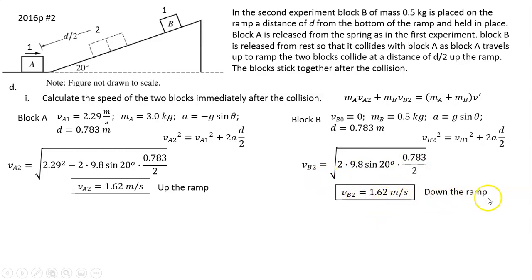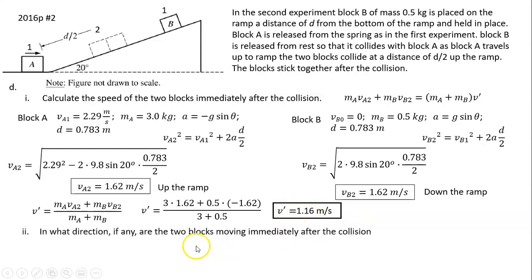Using conservation of momentum, we can find the speed after the two blocks collide together. Substitute the numbers. Pay attention: the velocity of block B is negative because it's opposite of block A. So you'll have v prime = 1.16 m/s. Pay attention—this number is positive. That means the direction of the two blocks after the collision is up the ramp, because down the ramp is negative, up the ramp is positive.